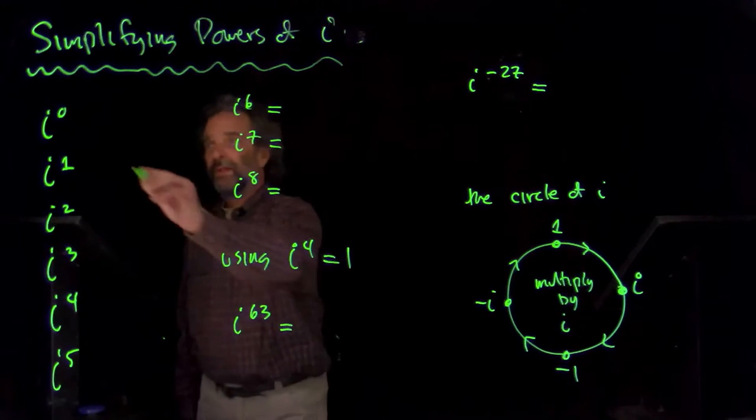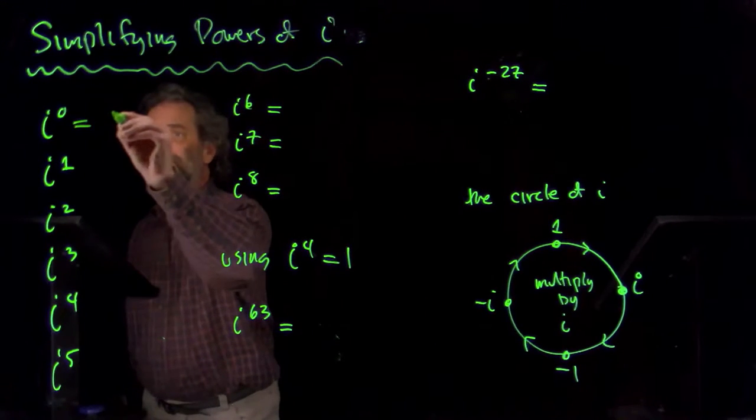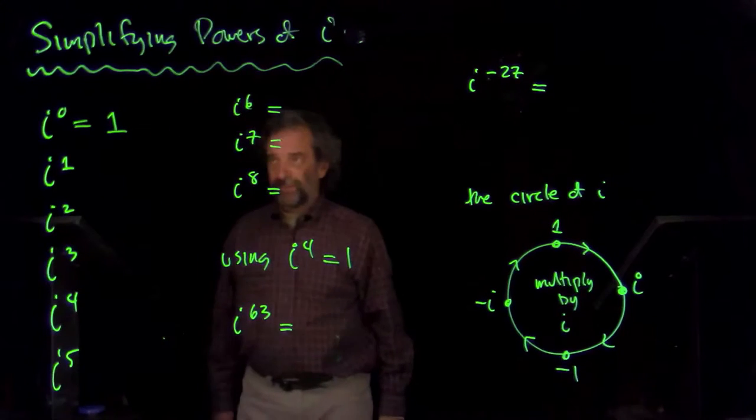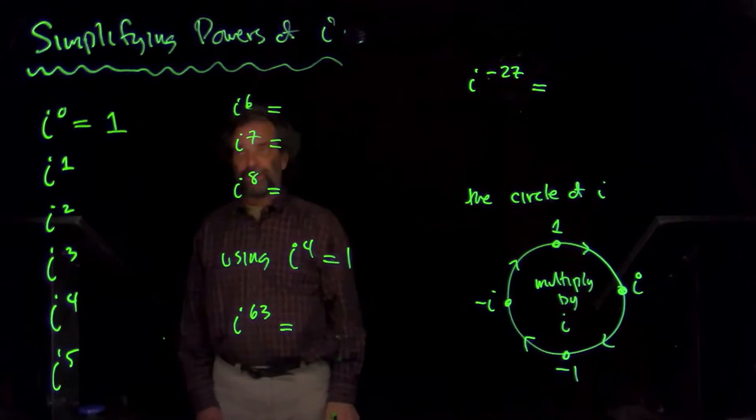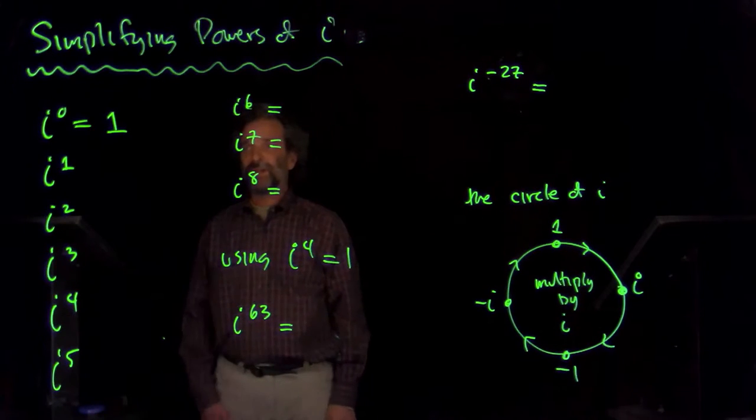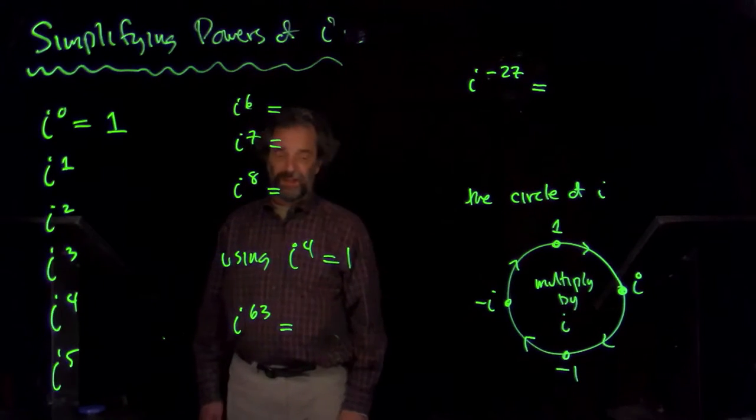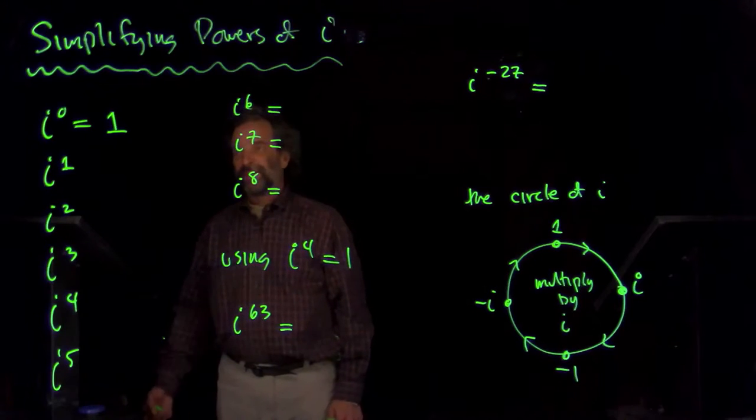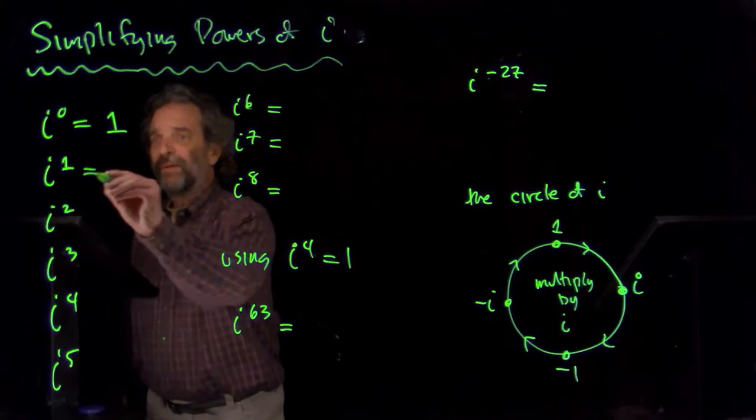We'll define i to the zero to be one. You pretty much have to do that for the rules of arithmetic to hold for exponent rules and so on. So, we'll just make the definition i to the zero is one. And i to the one, well, the one stands for one factor of i. So, that's just i.